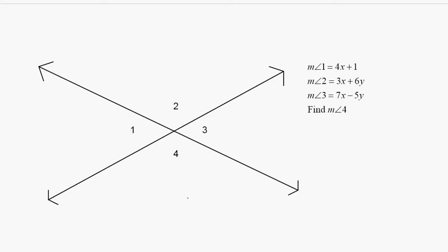So first thing we want to do is mark the diagram with what we know. So a lot of people do that. 4x plus 1, 3x plus 6y, 7x minus 5y.